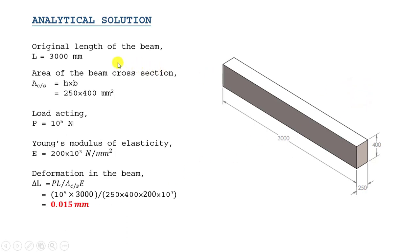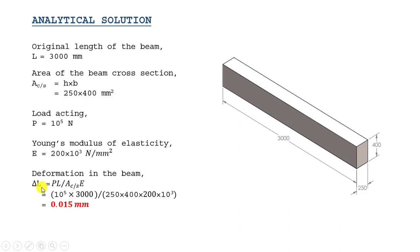Now let us calculate the deformation. The original length of the beam is 3000 mm, the cross-section area is 250 into 400 mm square, and the load is 10 to the power of 5 N. Converting Young's modulus from GPa to N per mm square gives 200 into 10 to the power 3 N per mm square. Inserting all values into the formula PL upon AE, the maximum deformation is 0.015 mm.